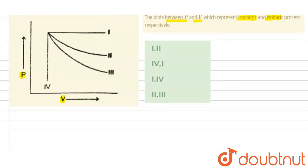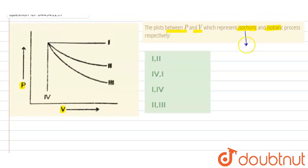see what is isochoric. Isochoric means volume constant. And isobaric means pressure constant.